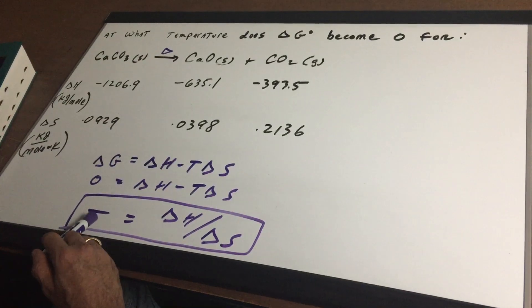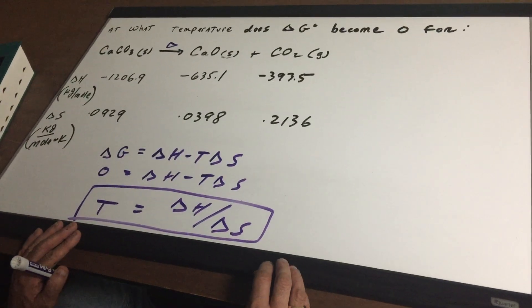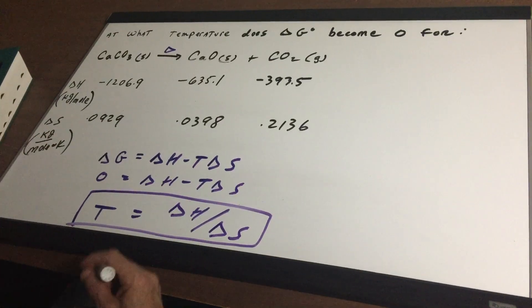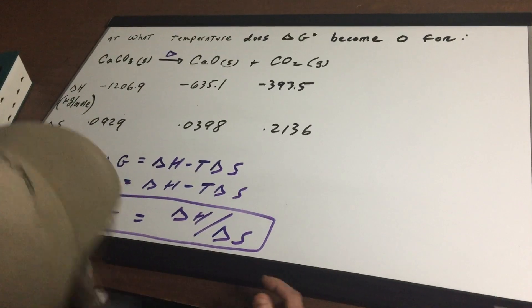So when I put that in and I bring the T Delta S to the other side and divide it through, we get the formula T equals Delta H over Delta S. But notice I wasn't so nice. I didn't just give you the Delta H and the Delta S. I'm going to make you work for it. So let's go to the other board and let's finish out the calculation.